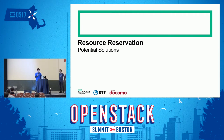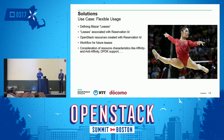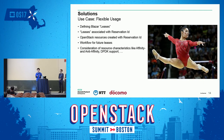I'm Masahito, working on the Blazar project. I want to show how Blazar solves each problem for the use cases shown by Tarek. For the flexible usage scenario, we use the basic feature of Blazar. Blazar defines leases as a top-level resource type in its API. One lease has multiple reservations, and one reservation has its reservation ID. Users create leases and reservations with the Blazar API, and then create their OpenStack resources related to the reservation with its ID.